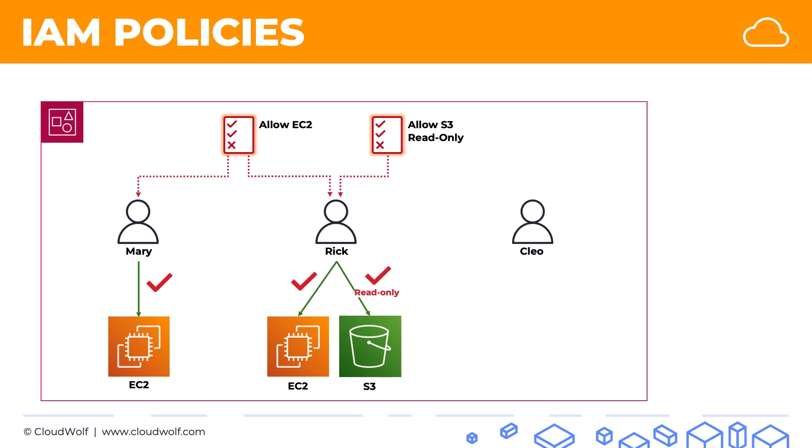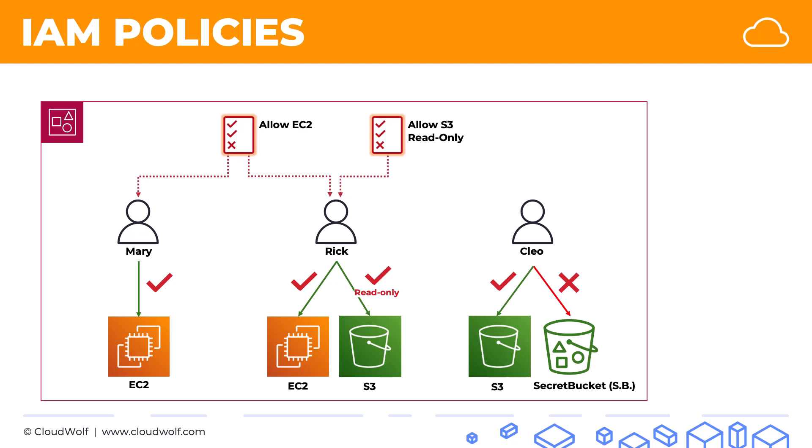Now let's say there's another user called Cleo, and Cleo needs full access to S3 but shouldn't be able to see a specific bucket called the secret bucket. We haven't spoken much about S3 yet — the Simple Storage Service will be covered further in the course — but for now just imagine a bucket as a folder. Basically, Cleo needs access to all S3, all of the folders, except for this one specific folder called the secret bucket. If we go through the AWS managed policies, we won't find one specifically for this use case because the secret bucket is something unique to our account.